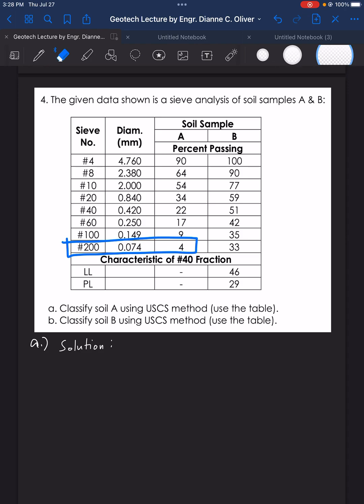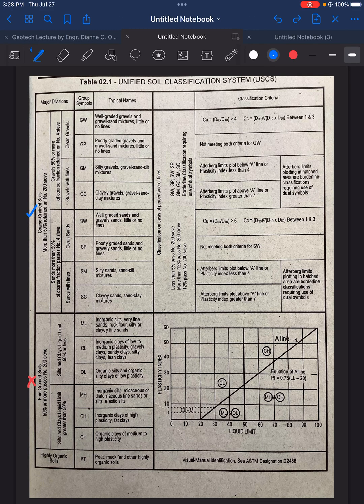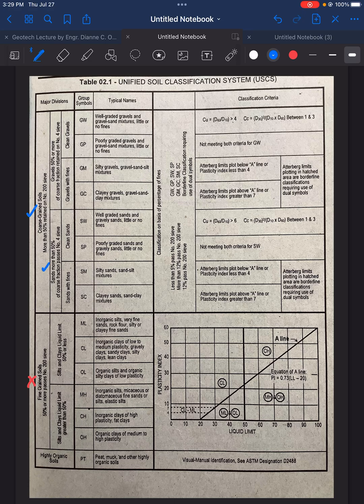For sieve number 4, we have 90% passing. Which means that there are more materials, there are more soil that passes through the sieve. Which means that yes, it is correct that there are more than 50% passing sieve number 4 and not more.